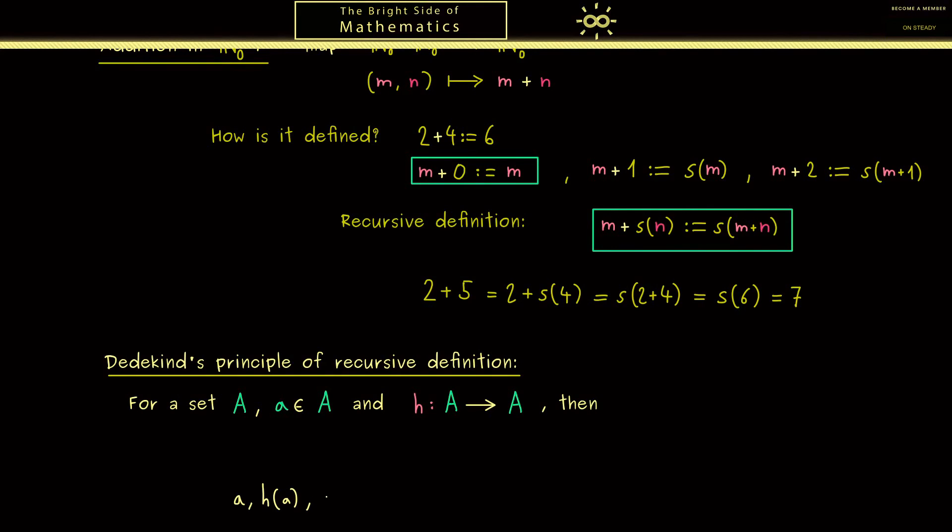In order to put this into a precise form, we would say there exists a map from the natural numbers into A. We call it F and there is only one such map. Now if we put in the number 0 we get out a, and if we put in the successor of the natural number n, we just apply H one more time. So it should be H of F of n. Of course often we just read the whole principle here backwards.